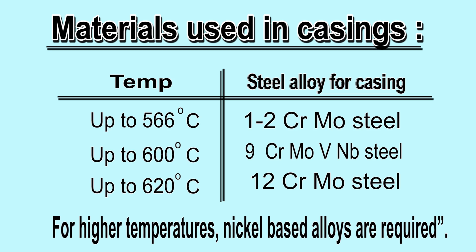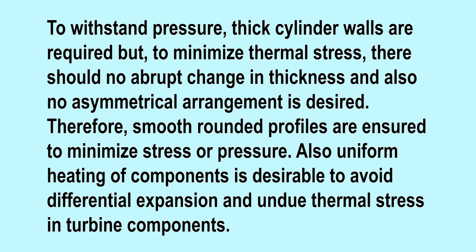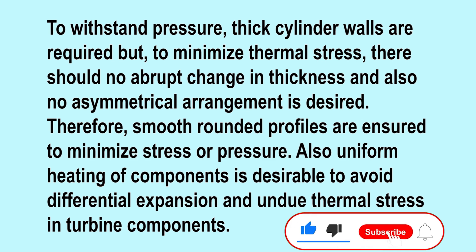Materials used in casings are usually low alloy chromium molybdenum steels, for example 1-2 CrMo steel, which can withstand temperatures up to 566 degrees centigrade. For higher temperatures, say 600 degrees centigrade, 9 chromium steels are considered adequate in terms of strength. Similarly, 1-2 Cr steel can withstand up to 620 degrees Celsius. For even higher temperatures, nickel-based alloys are required. To withstand pressure, thick cylinder walls are required.